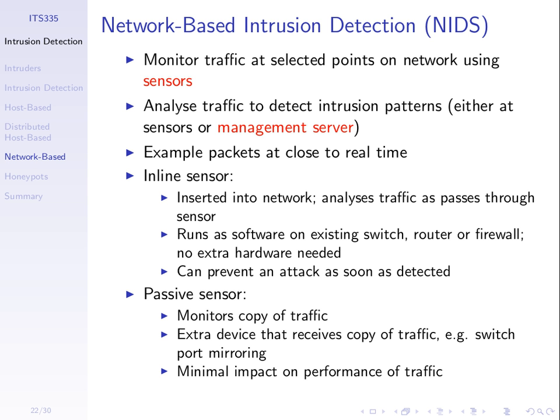The analysis may be done at the sensors, or they may send information to some management server that does the analysis for all of them. We need to examine packets at close to real-time. As packets are being sent through the network, the sensors capture the packets — the same concept as TCP dump. Look at the contents of those packets: who's sending them, who they're sending to, what protocol, what's the contents. Try to make a decision: are these packets an indicator of an intruder or not? That needs to be done quickly — examine packets very quickly at close to real-time, because slowing down packet examination would slow down delivery in the network.